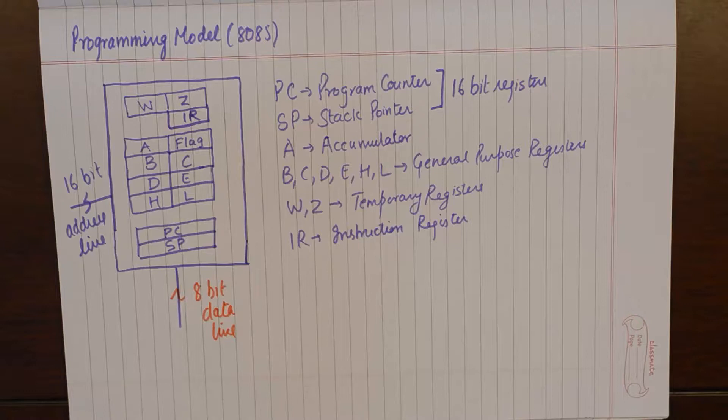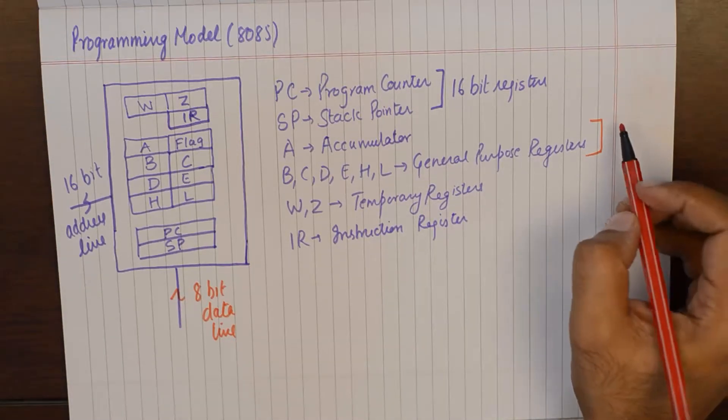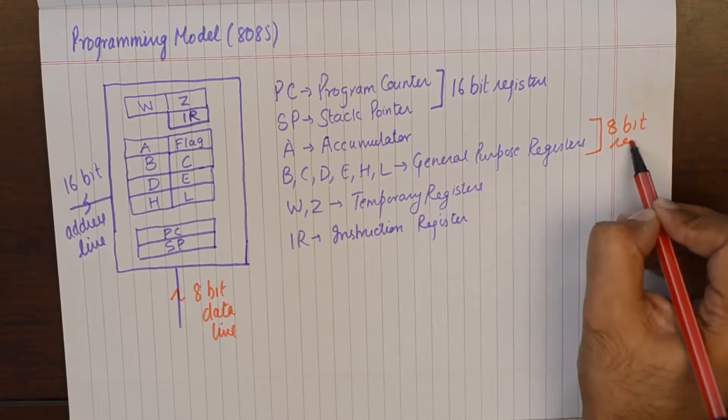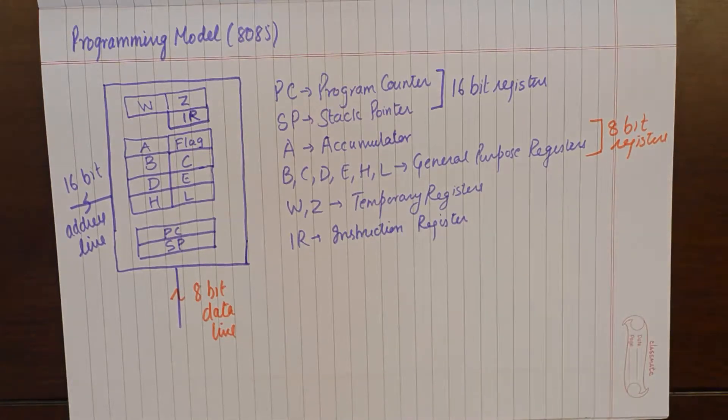Obviously the answer would be 8 bit and that is why all the registers, the general purpose registers are 8 bit registers because they are dealing with the data which is coming from the memory or they are dealing with the data that the microprocessor has to send to the external memory. And similar is the case with W and Z temporary registers.